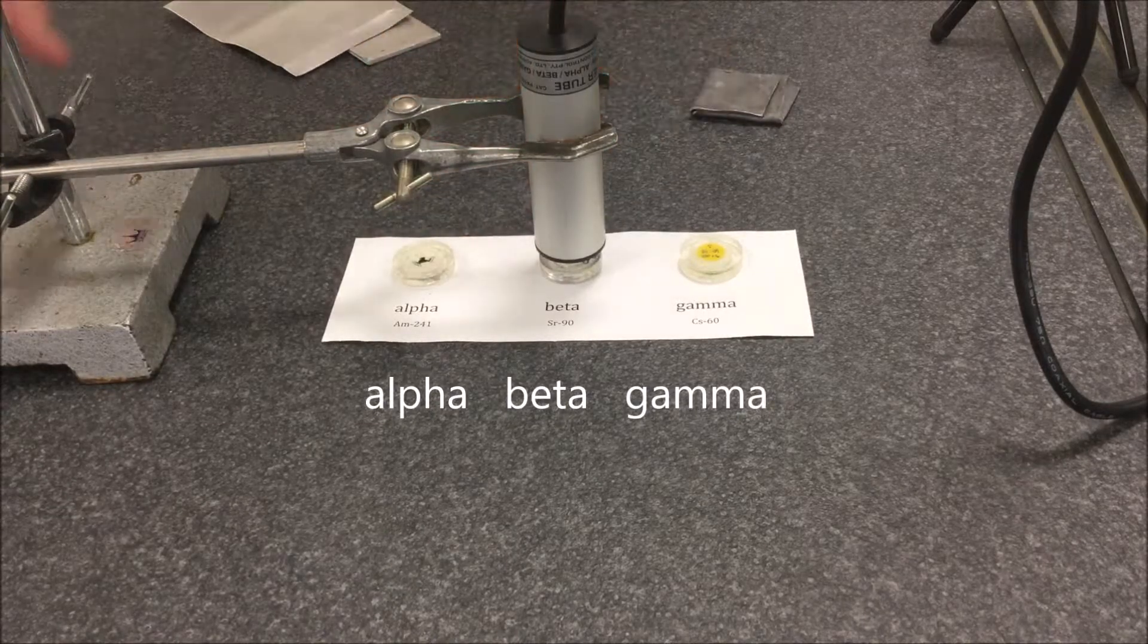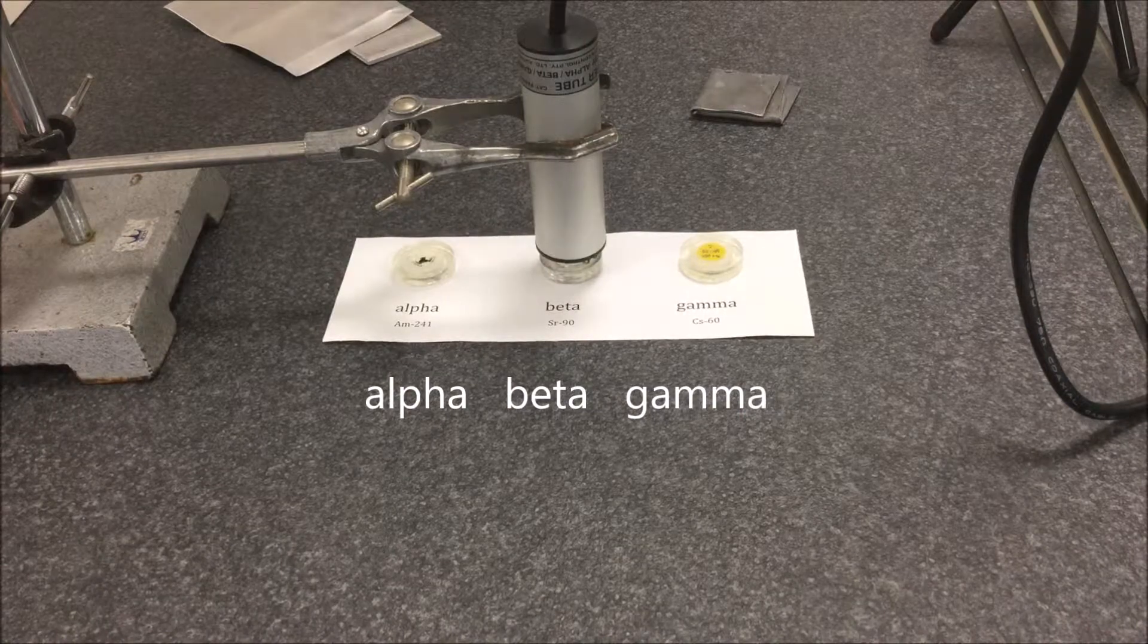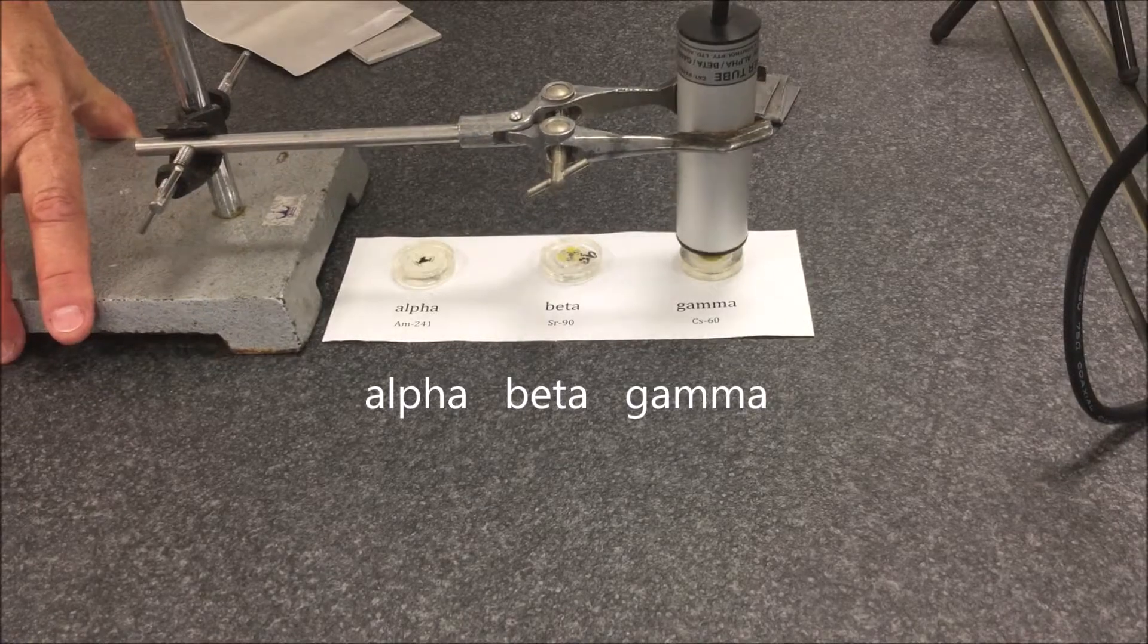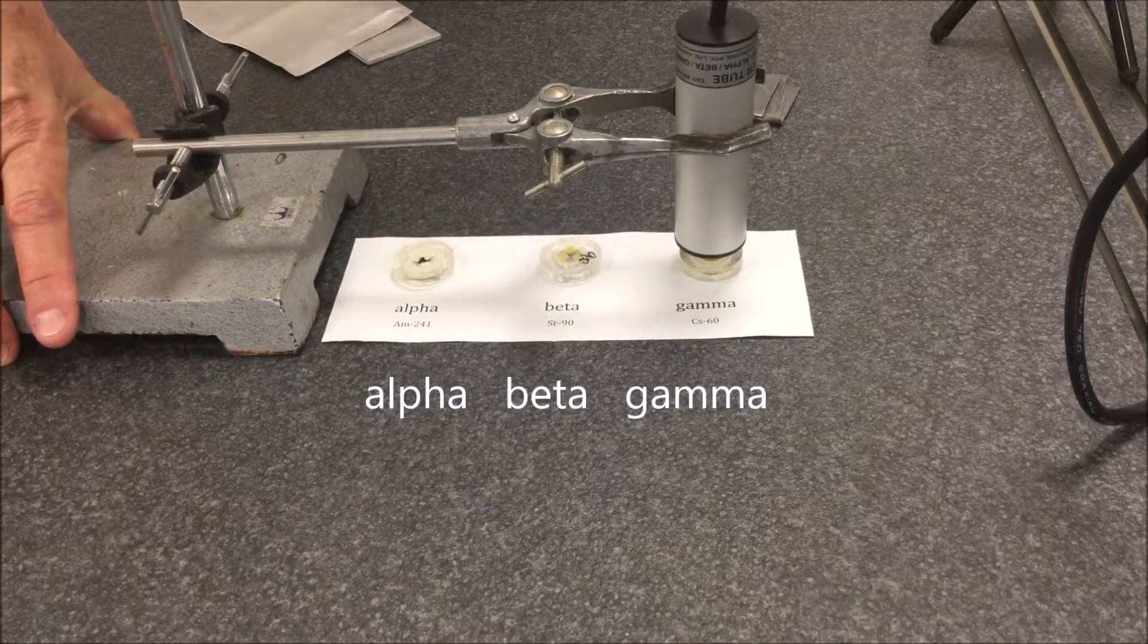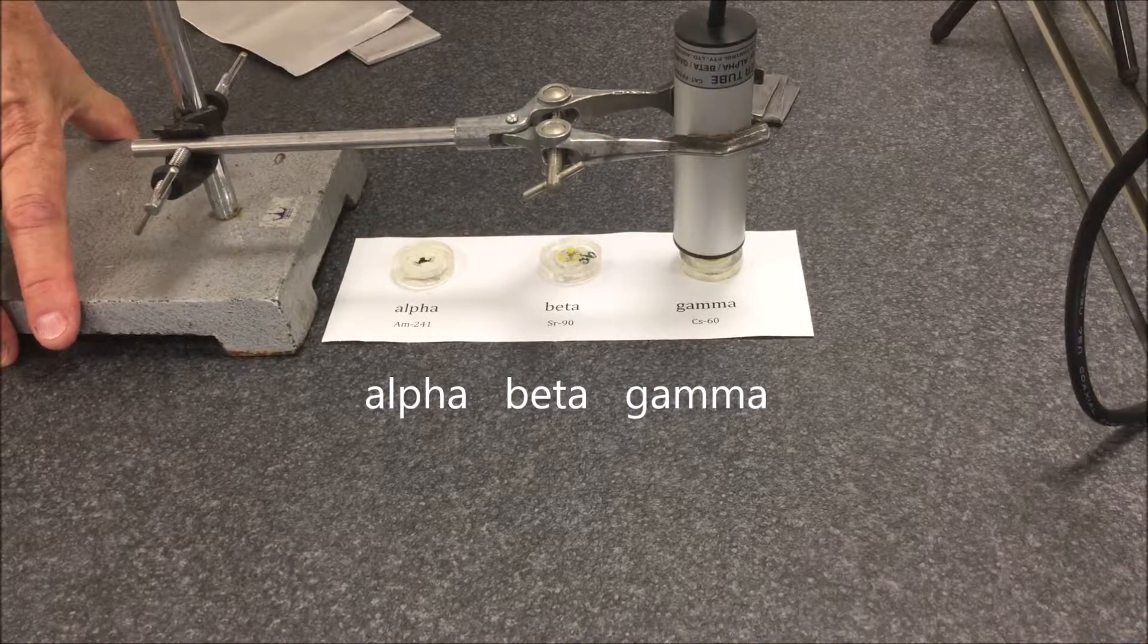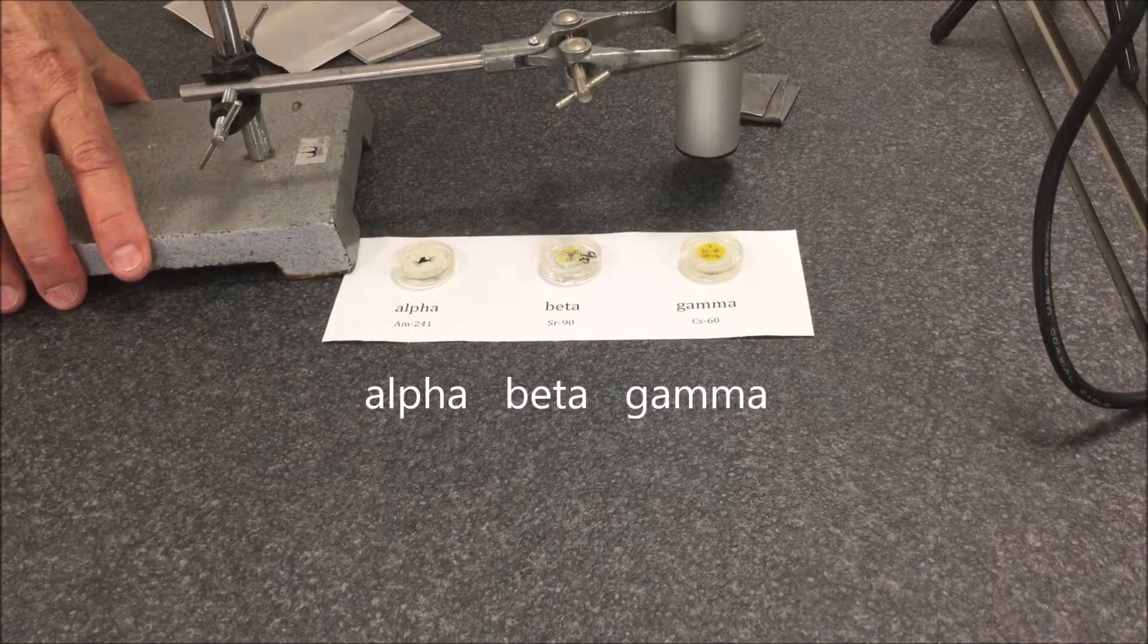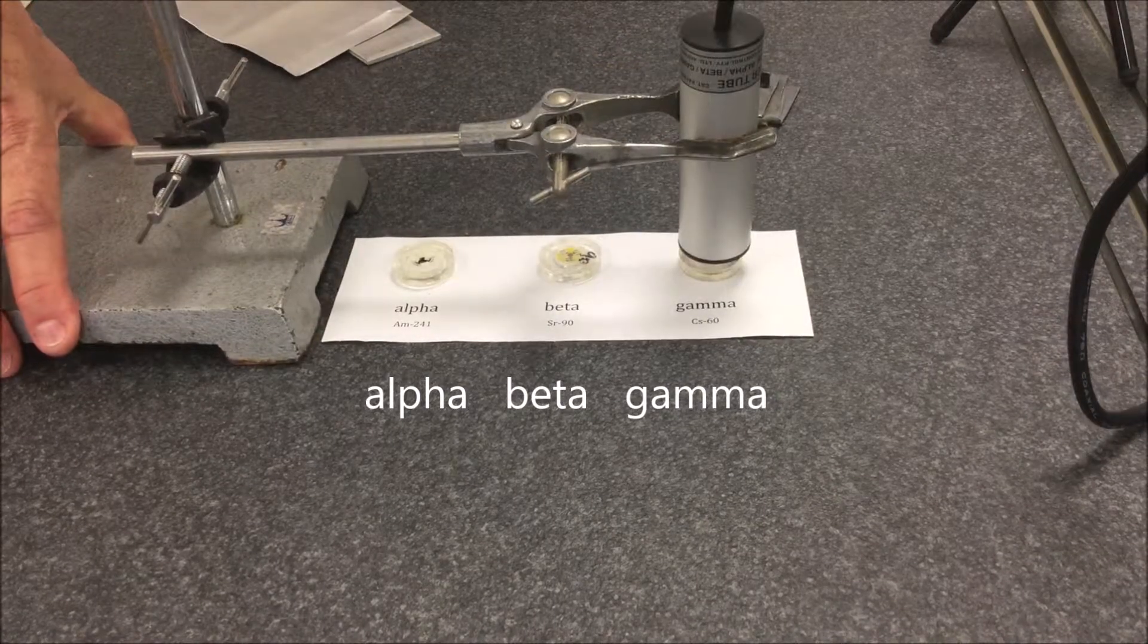Okay, I'll move on to gamma. Now, this is a cesium-137 sample. And you can hear, it's not that active, but it's above background. Background's like that. And the sample's more active.